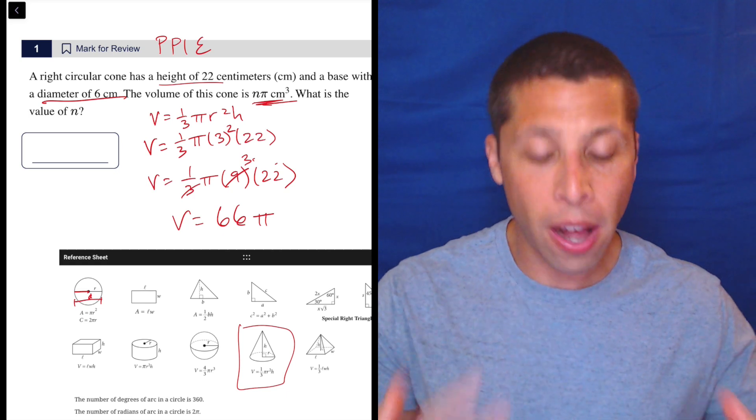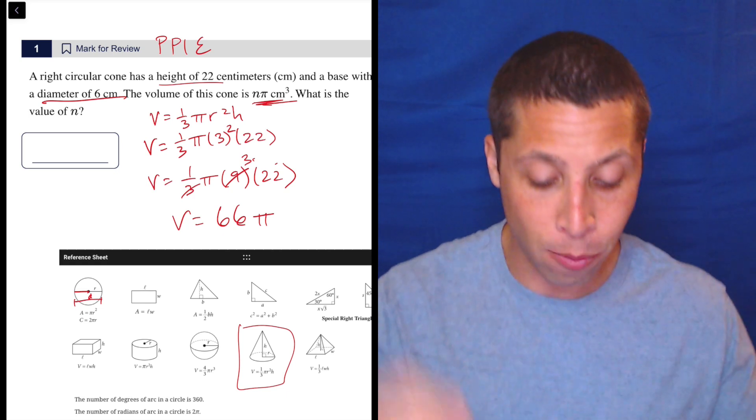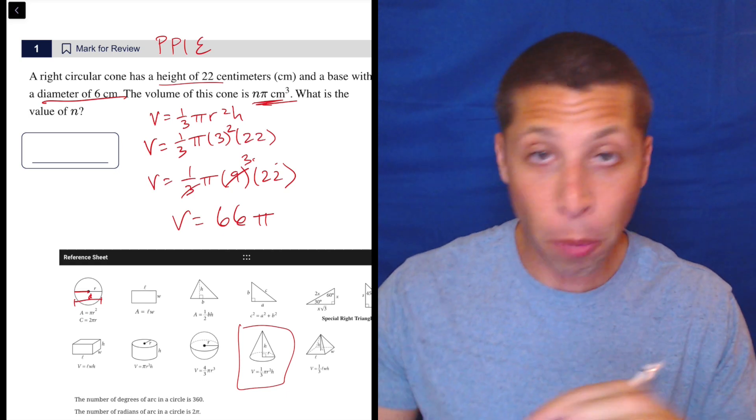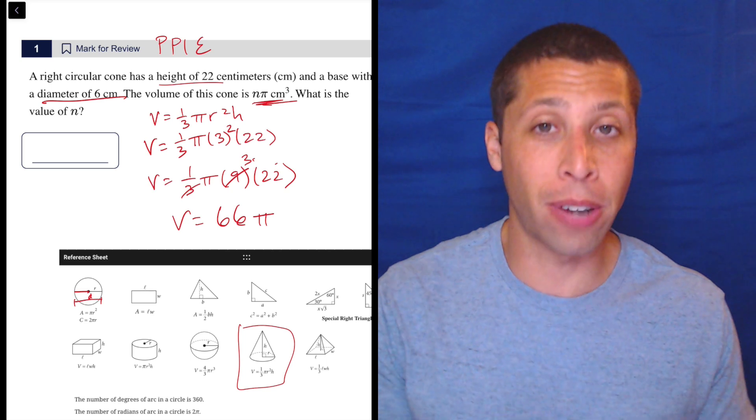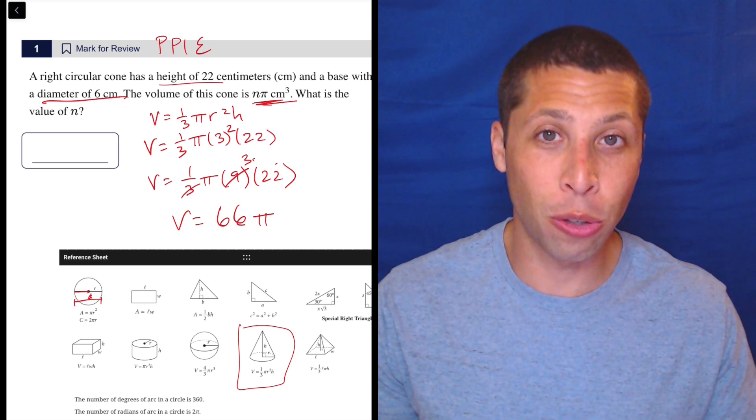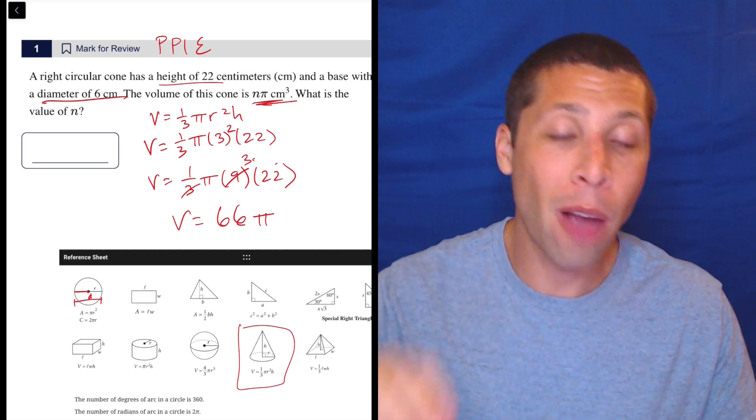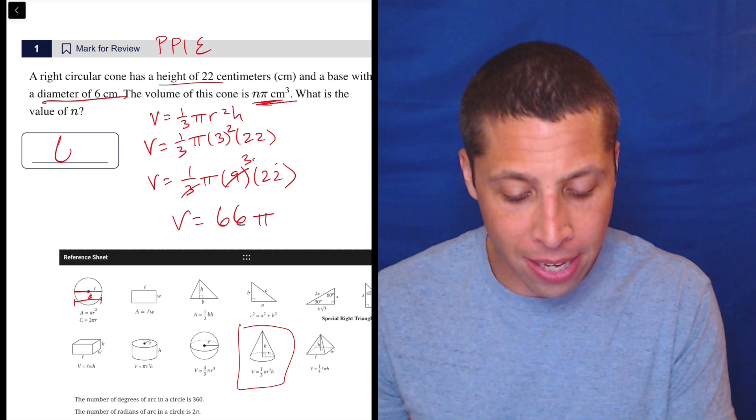the way they ask this, right? The volume of the cone is n pi. What is the value of n? Don't multiply by 3.14 in a calculator. That's not what they're asking you to do. They're telling us to just keep the pi there. And what's the number attached to the pi? It is 66.